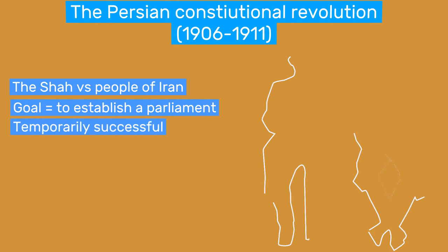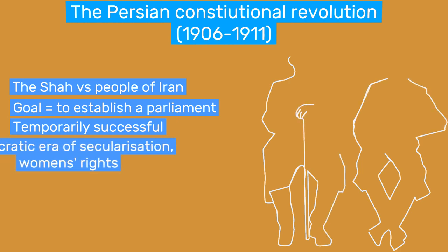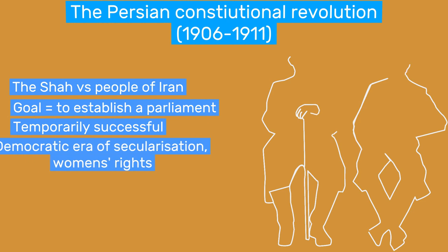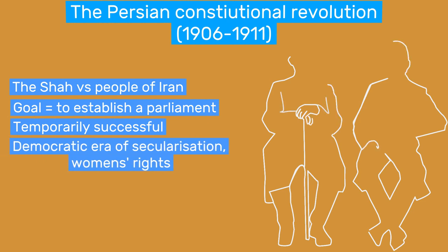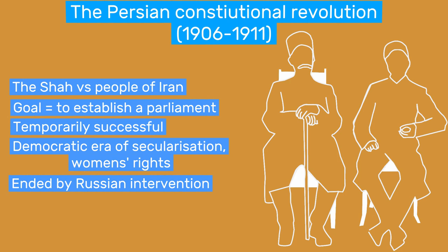The revolutionaries temporarily managed to achieve their goals. This era of Iranian history is especially interesting because in this period, Persians got the right to vote for the first time, the Persian state became more secularized, and the role of women in society improved. Another reason why this era should be studied is because the revolution was eventually toppled by Russian and British nations.